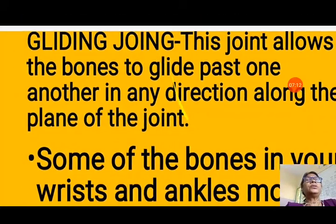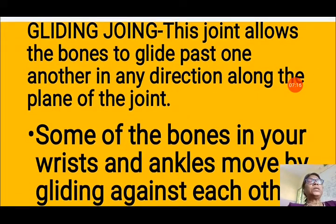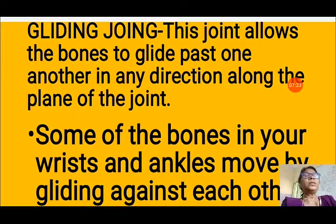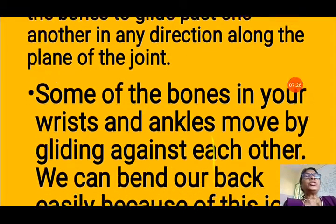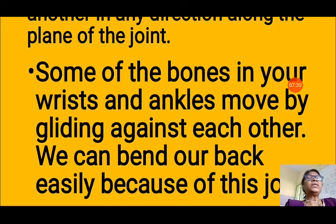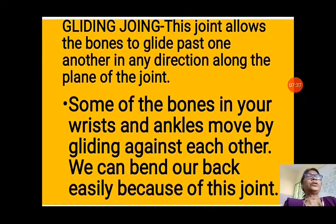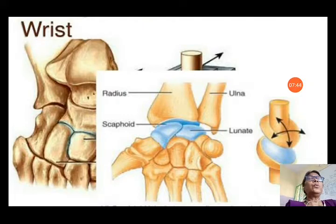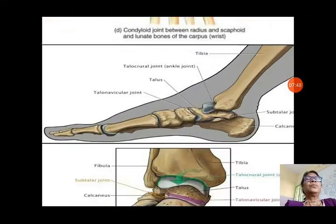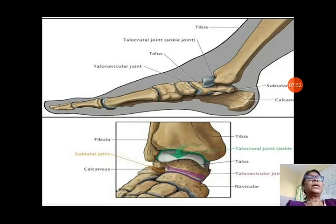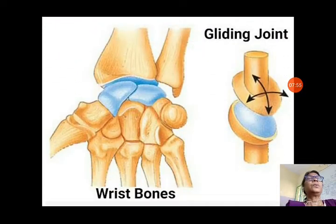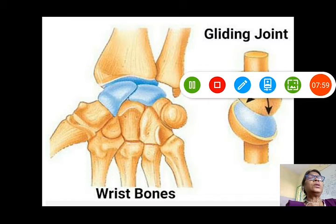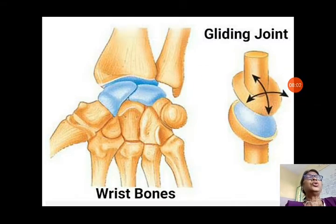Next is the gliding joint. This joint allows the bones to glide past one another — they glide over each other in any direction along the plane of the joint. Some of the bones in your wrist and ankles move by gliding against each other. You can bend your back easily because of this joint — in the back, 33 small bones are joined to each other with gliding joints. You can see the picture: your wrist and ankle have gliding joints where the bones glide over each other.